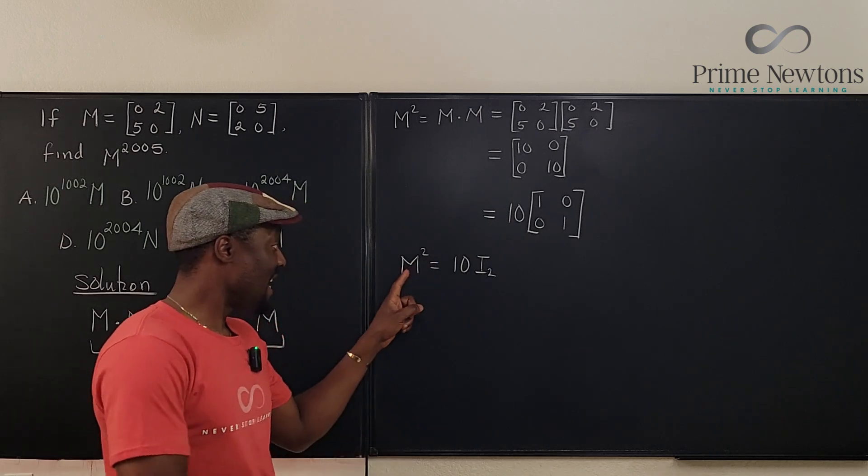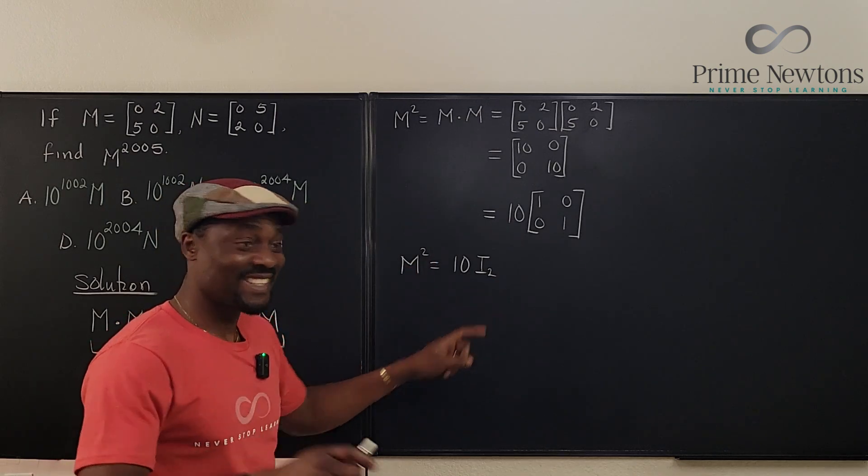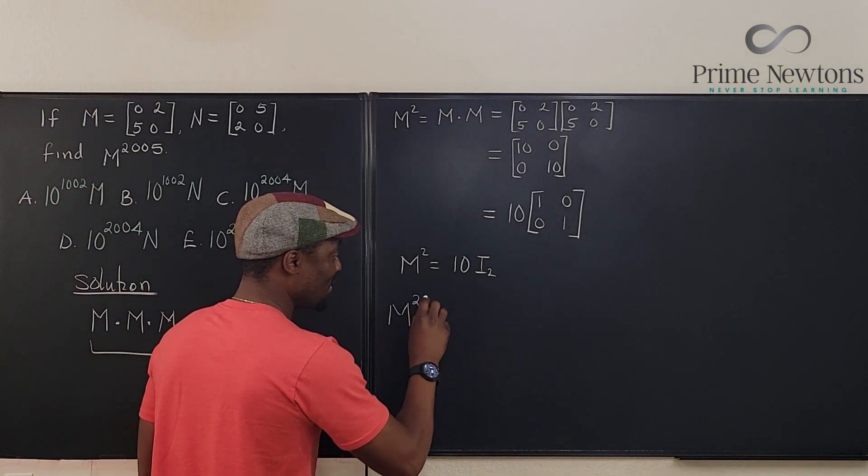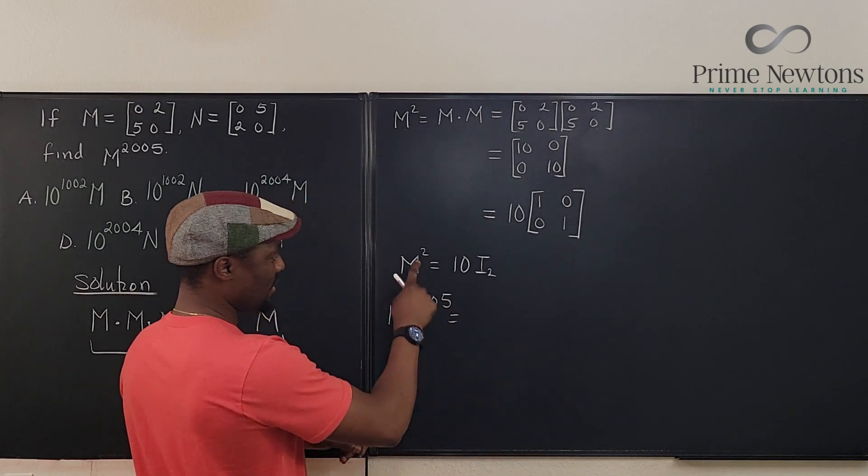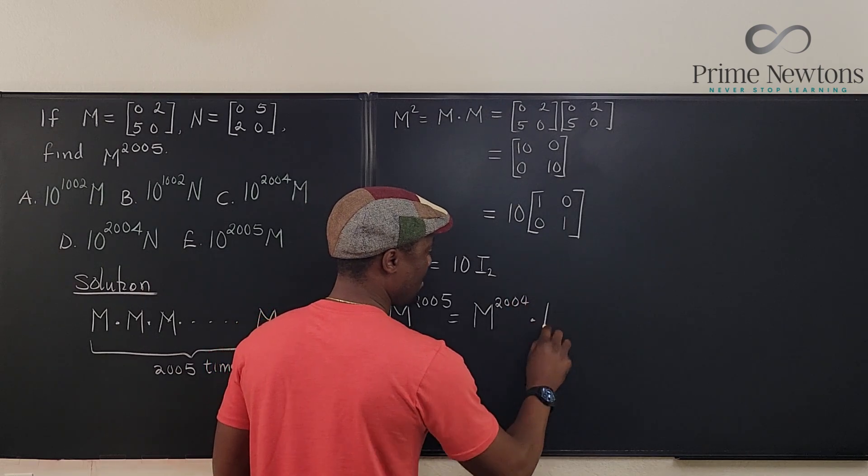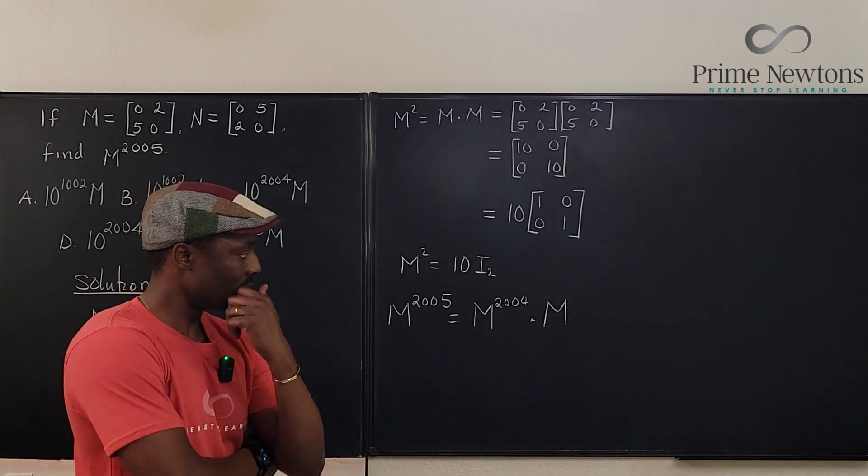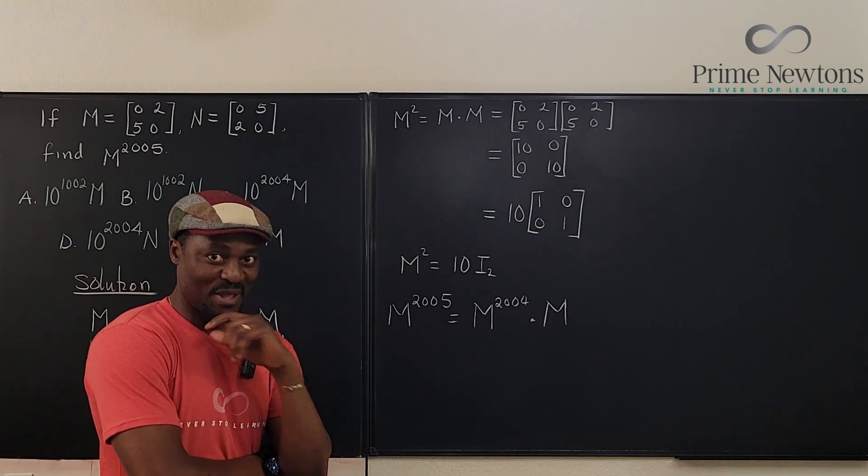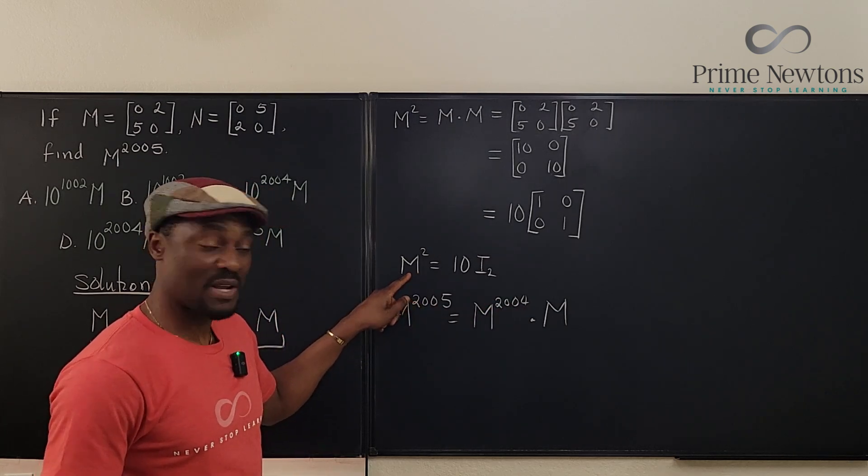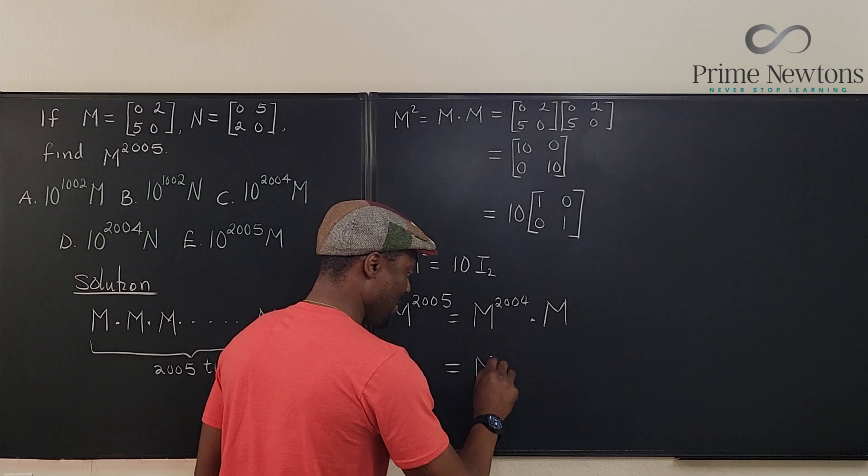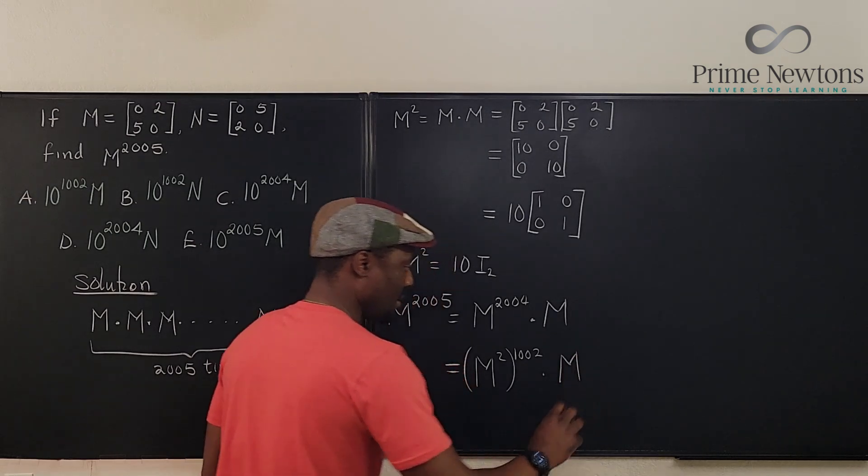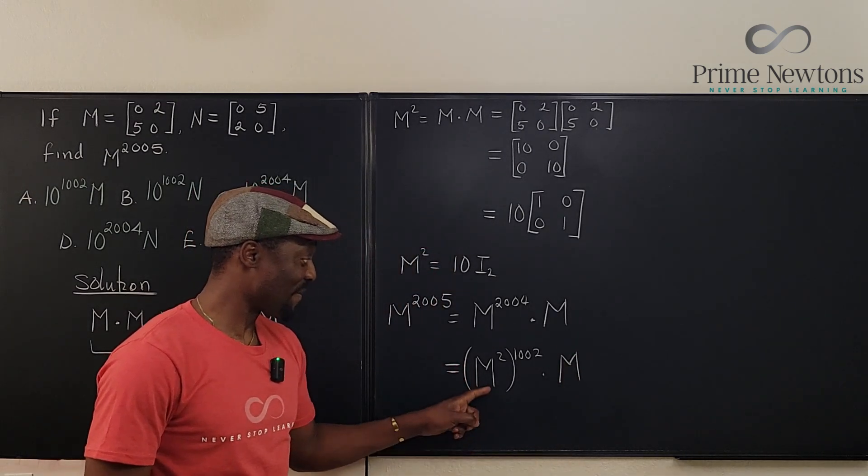If M squared is 10I, then I can go back to the original problem. M to the 2005 will be... I can write it as M to the 2004 times M.